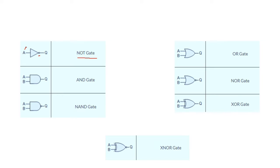For the NOT gate, when we have input one, the output will become zero. And if we have zero, the output will become one. This is a NOT gate — the circle means NOT.